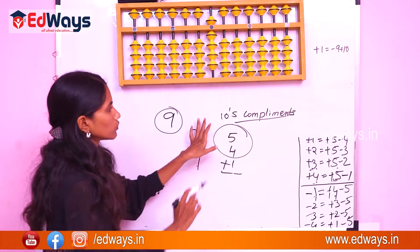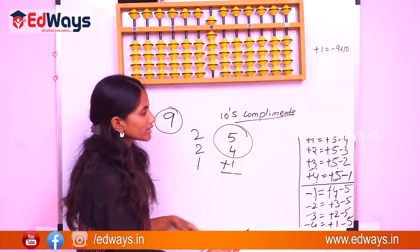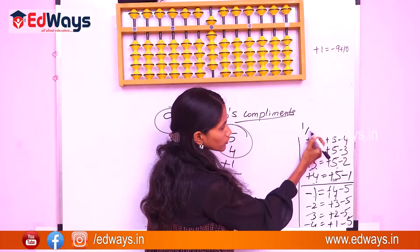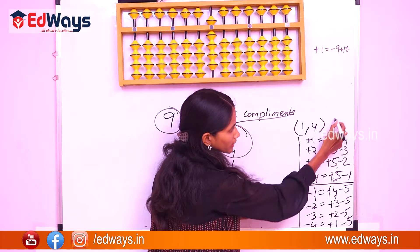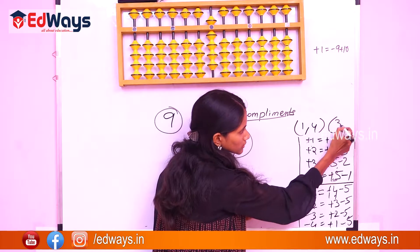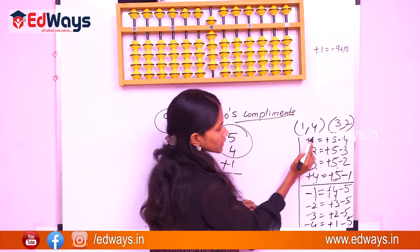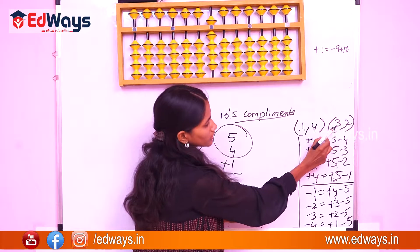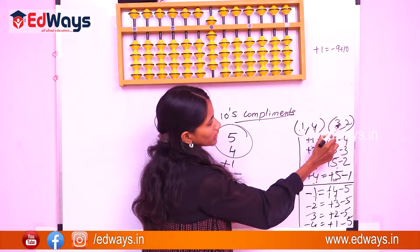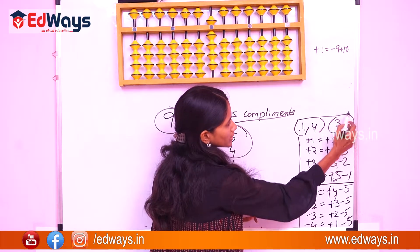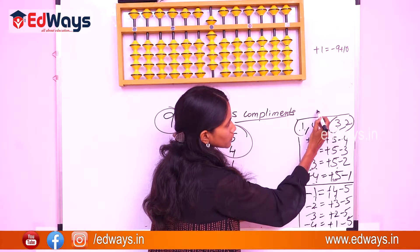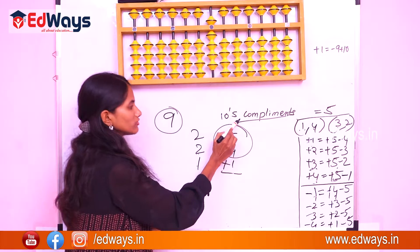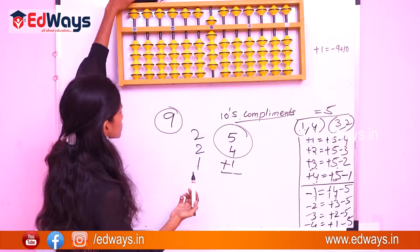What are tens complements? Just as with fives complements — where 1 and 4 are complements, and 2 and 3 are complements, because they add up to 5 — in the same way, tens complements are pairs of numbers whose sum equals 10.